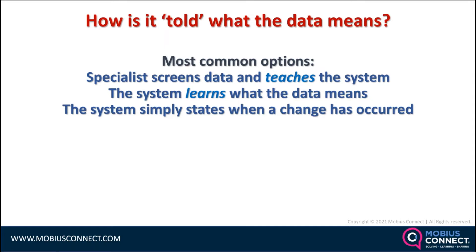One classic example is that medical specialists have been analyzing mammograms for many years and had identified — I forget the exact numbers — say five telltale signs that a woman might have breast cancer. They fed all those mammograms and specialist diagnoses into one of these systems, and it actually found that there were six ways to determine if a person may have breast cancer — another telltale sign that humans had never recognized before.